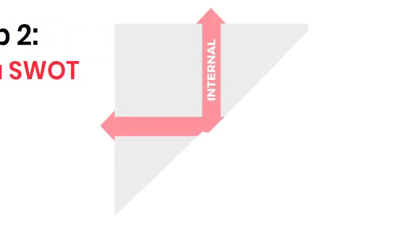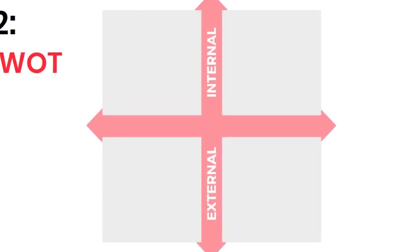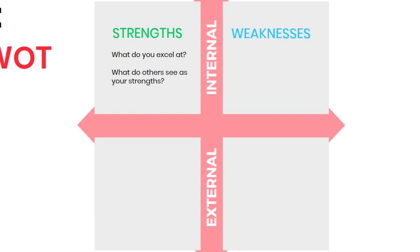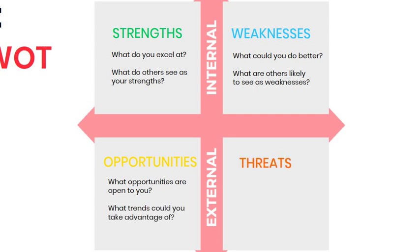Do a SWOT analysis. Identify the internal and external factors affecting the organisation by conducting a SWOT analysis. This involves listing the organisation's strengths, weaknesses, opportunities and threats. Strengths: what do you excel at? What do others see as your strengths? Weaknesses: what could you do better? What are others likely to see as your weaknesses? Opportunities: what opportunities are open to you? What trends could you take advantage of? Threats: what threats could harm you? What are your competitors up to?